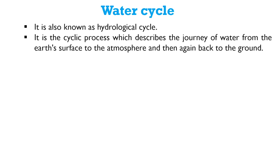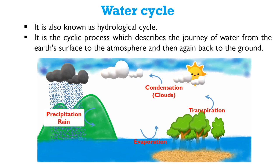The water cycle is also known as the hydrological cycle. It is the cyclic process which describes the journey of water from the Earth's surface to the atmosphere and back to the ground. This diagram illustrates some of the stages of the water cycle: precipitation, evaporation, transpiration, and condensation. But other processes are also involved in the water cycle.